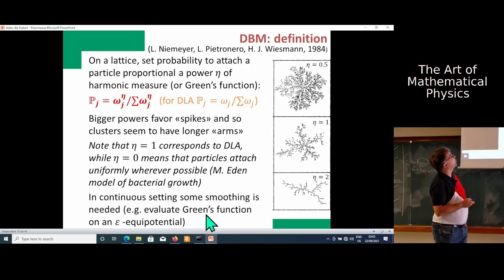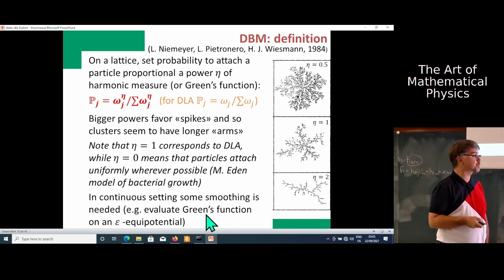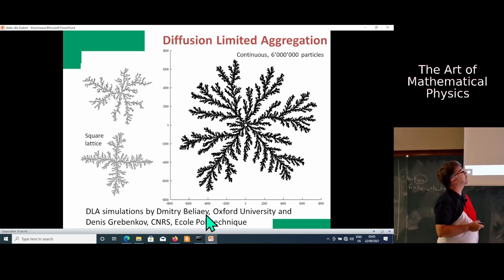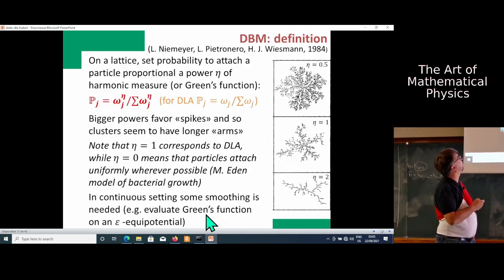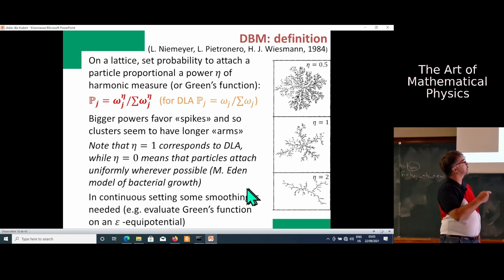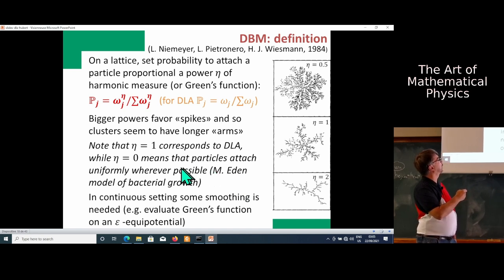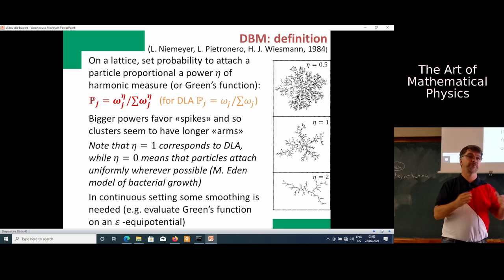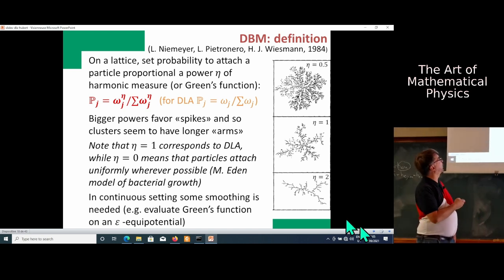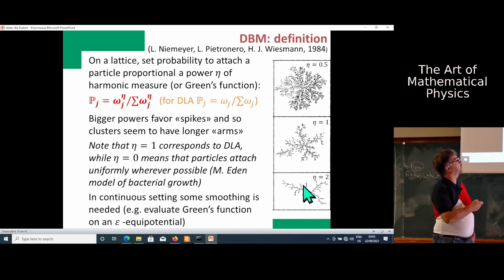What is the dielectric breakdown model? It's a generalization of DLA. You land proportionally to some power of harmonic measure. You take parameter eta and you land proportion to omega to the power eta. You have to normalize so probability sums to one. If you vary parameter eta, you get different models. For eta equal one, it's Eden model, equally likely to land at every available place. Eta equal one gives DLA. Eta equal two is closer to these lightning things.